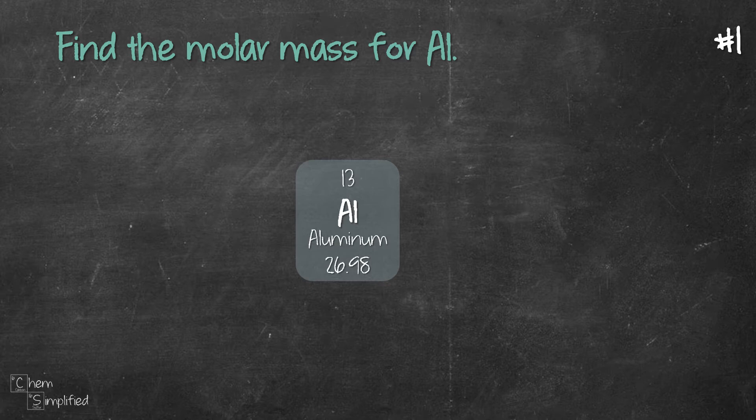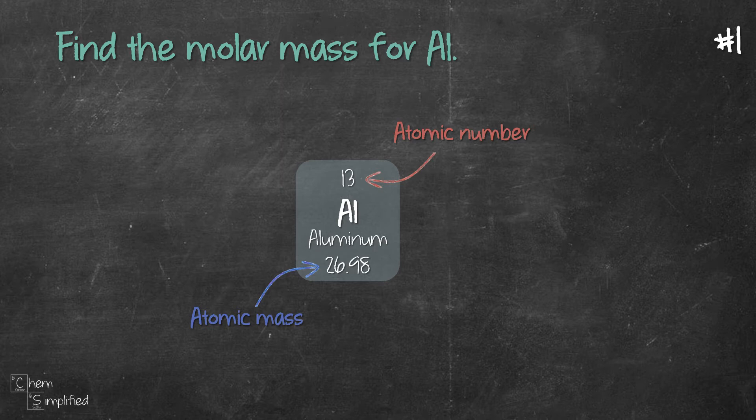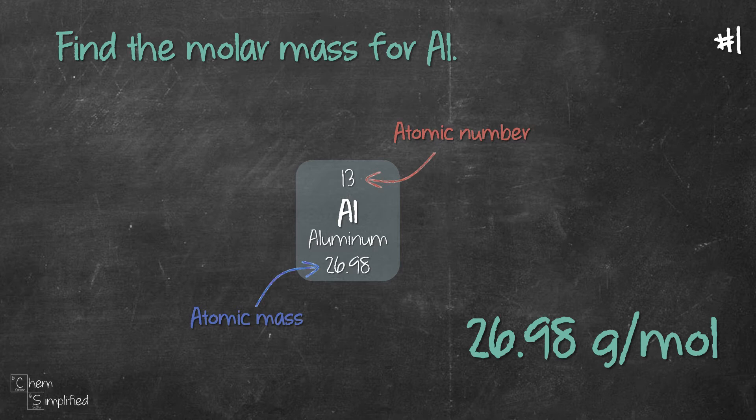The smaller value 13 represents the atomic number, while the larger number 26.98 represents the atomic mass. Since the molar mass for an aluminum atom is the atomic mass, that means the molar mass for aluminum is 26.98 grams per mole.